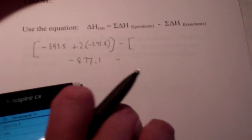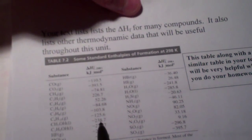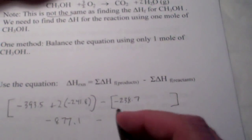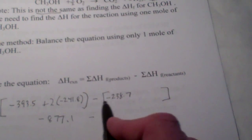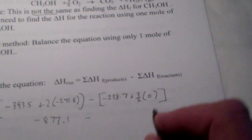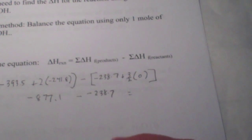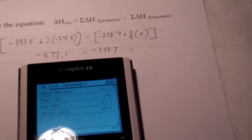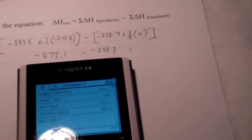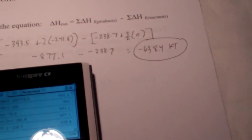Now subtract out the heat of formation of my reactants. Methanol is the reactant — there's only one — and methanol's heat of formation is negative 238.7. I didn't change the sign; when I subtract a negative, that's already taken care of. Plus three-halves times zero, since oxygen is an element. So: negative 877.1 minus negative 238.7 gives negative 638.4 kilojoules per mole of methanol. That is the heat released per mole of methanol burned.